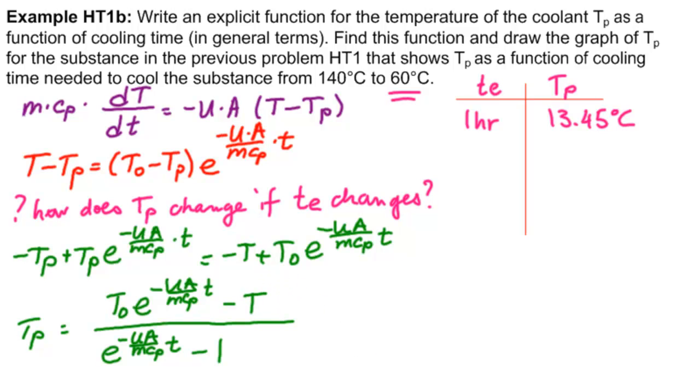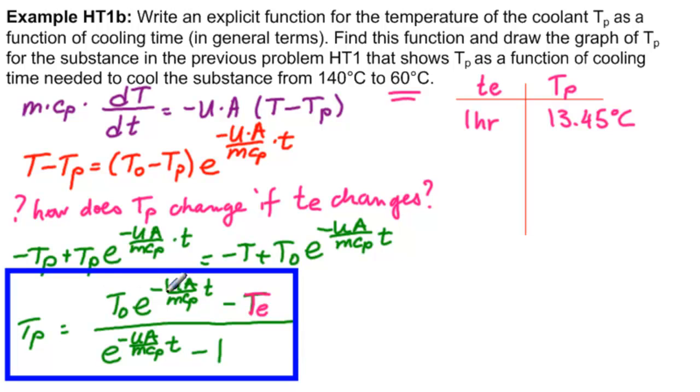Minus T. Now, this is our TE. So this is our explicit function for TP and the answer to the first part of the problem.